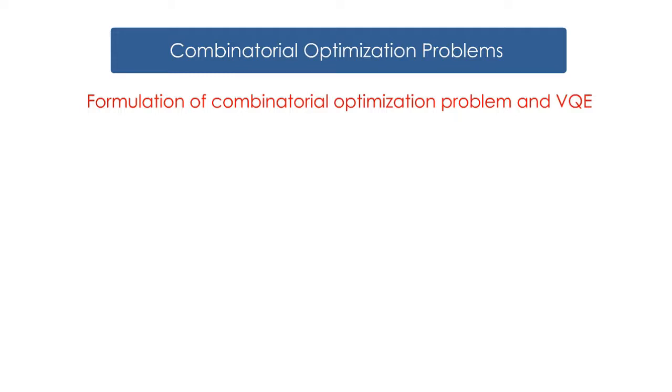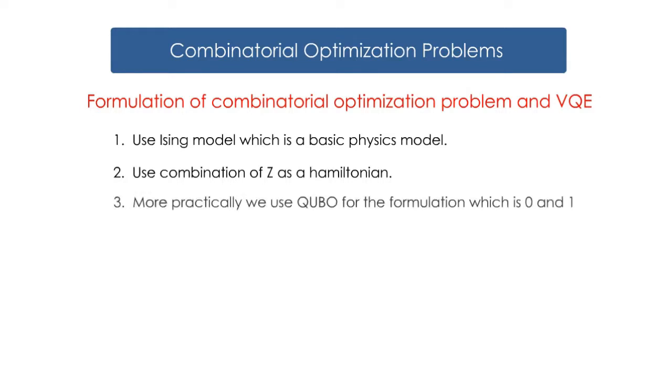The main steps are: 1. Use Ising model which is a basic physics model. 2. Use combination of Z as a Hamiltonian. 3. More practically we use QUBO for the formulation which is 0 and 1 instead of negative 1 and positive 1 of Ising model.